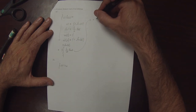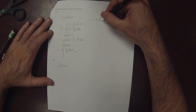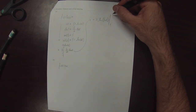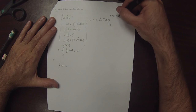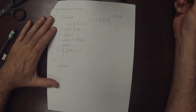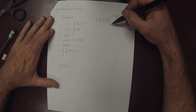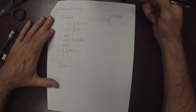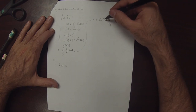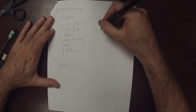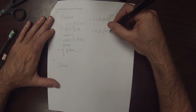That gives 3 times log of the absolute value of w, evaluated from 1 to 1 plus log 2. Since all values between 1 and 1 plus log 2 are positive, we don't need the absolute value. And since log of 1 is 0, the answer is simply 3 times log of (1 plus log 2).